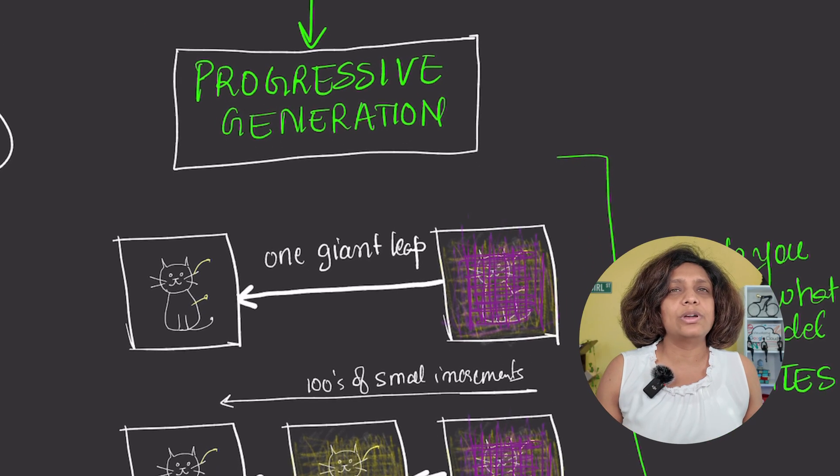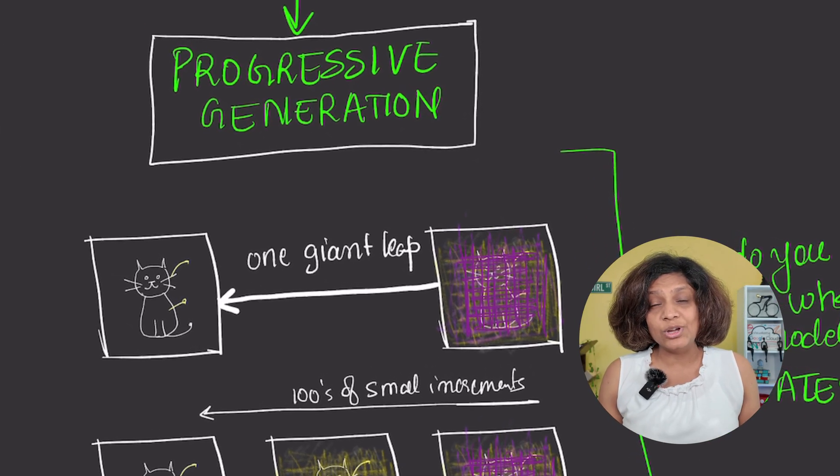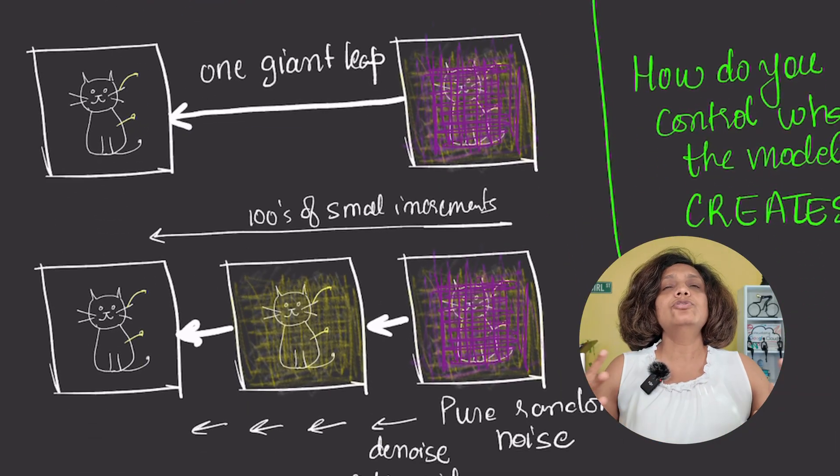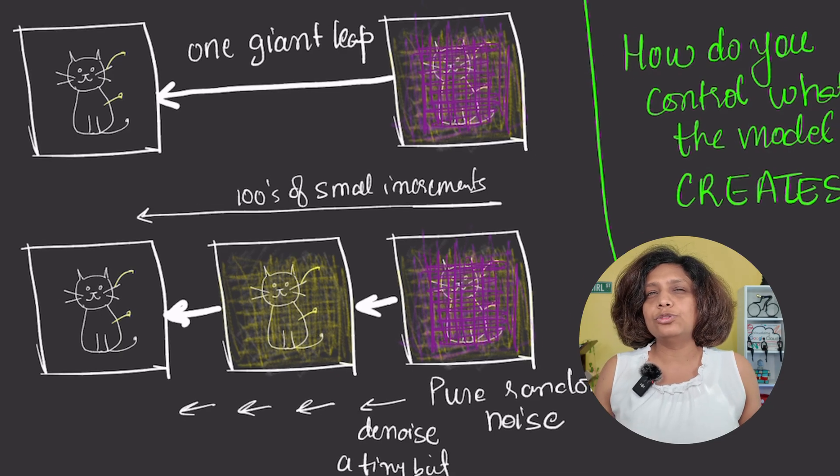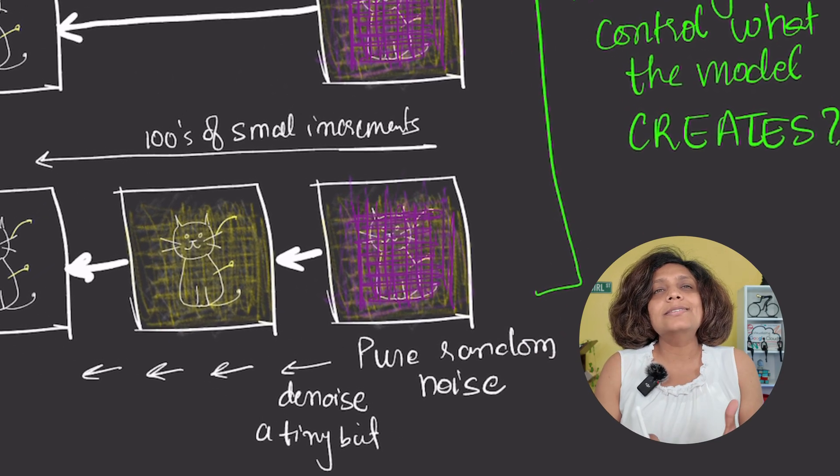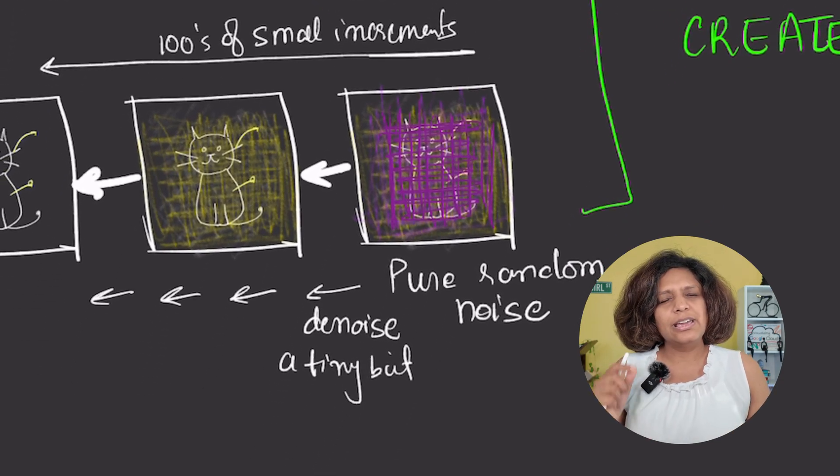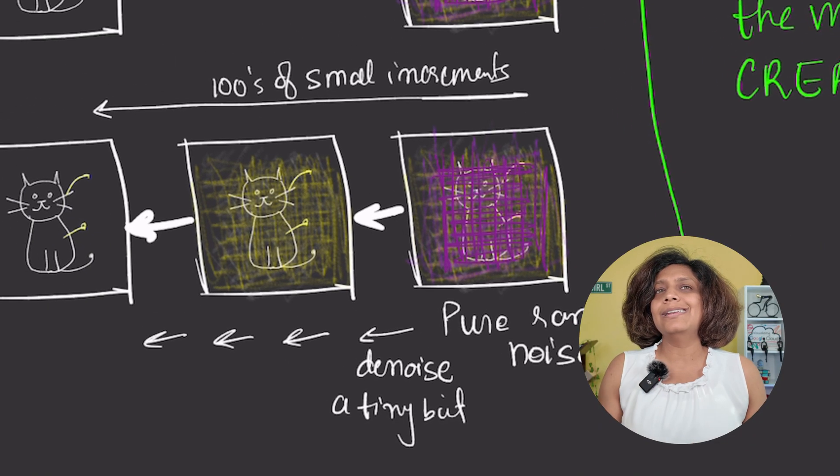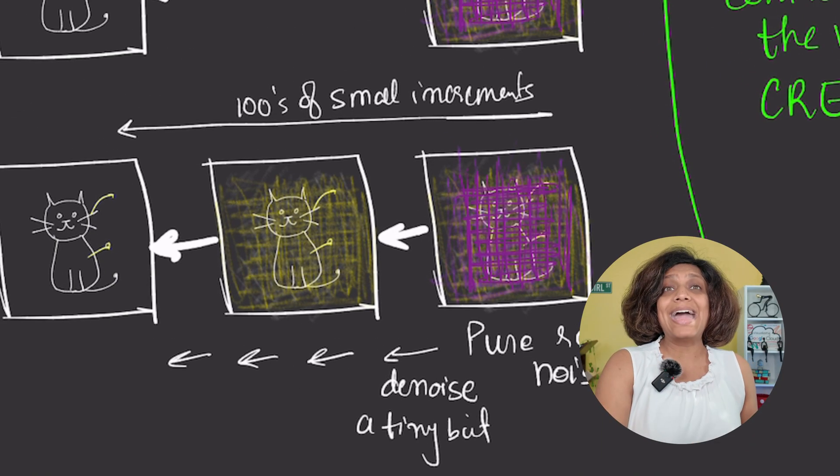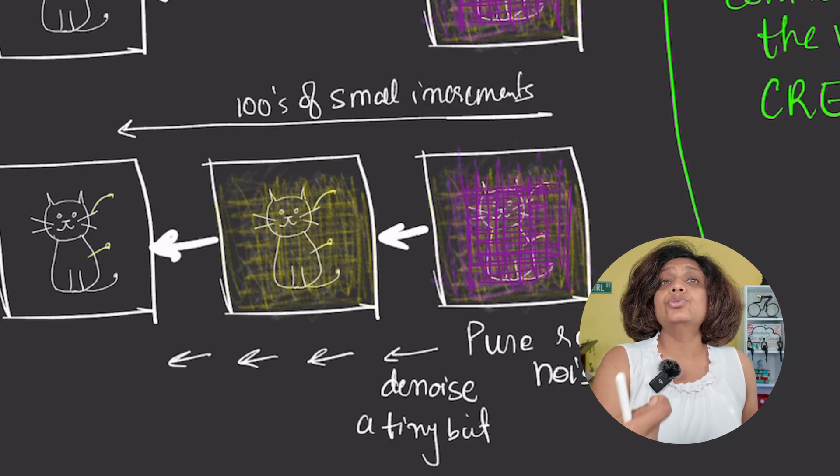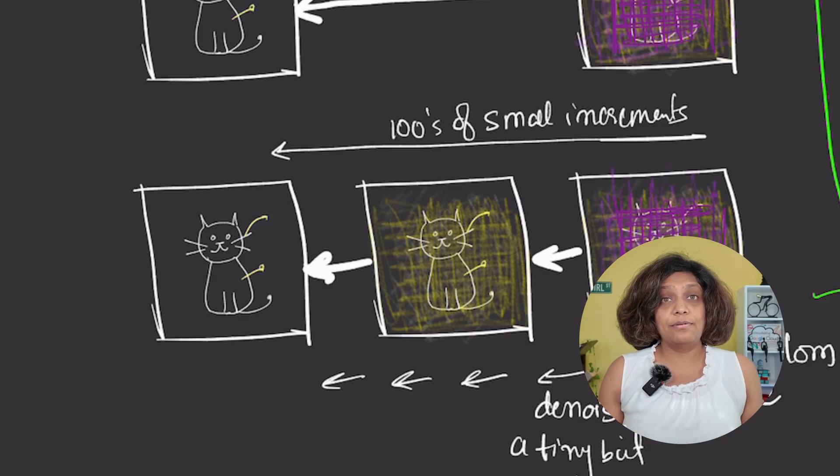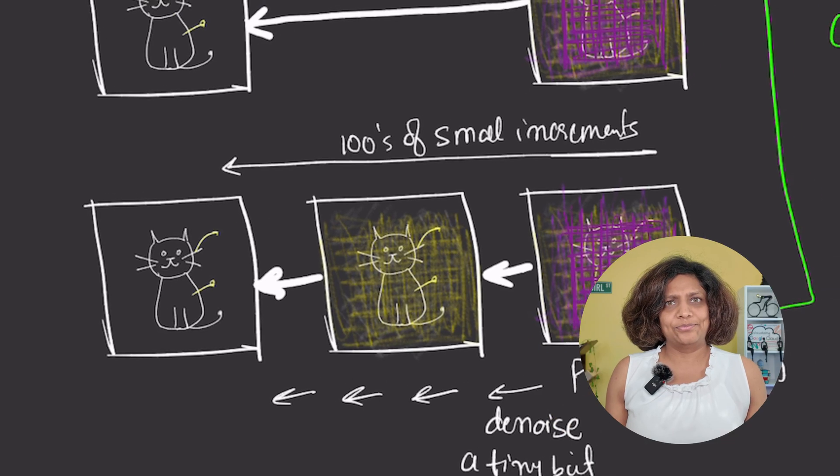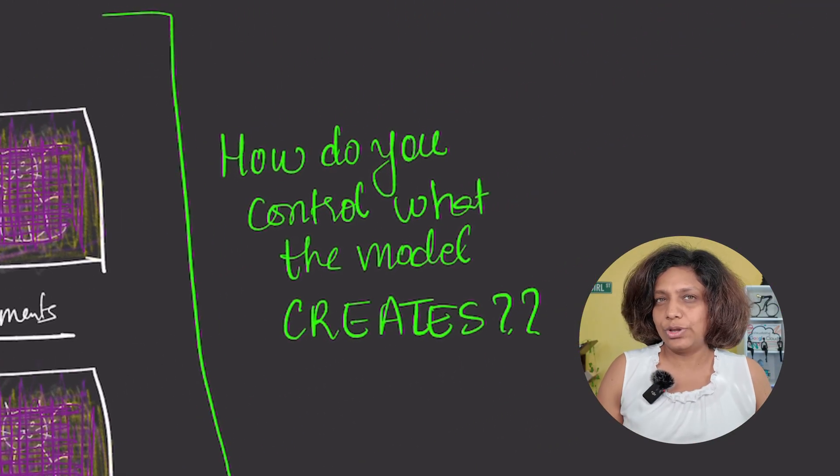Instead of removing all the noise in one giant leap, the model does it in hundreds of small manageable steps. To generate a new image, we start with pure random noise and ask the U-net to denoise it just a tiny bit. Then we take that slightly less noisy image and feed it back in, asking it to denoise again and again and again. This is incredible, but it just generates a random face from its training data. How do we control what it creates?